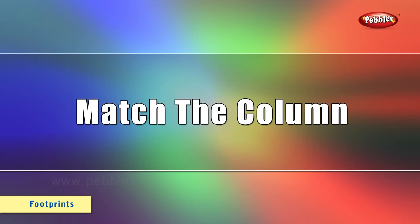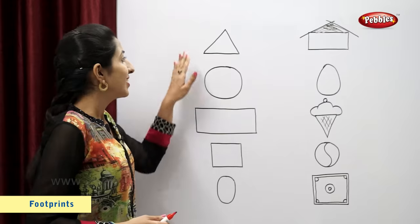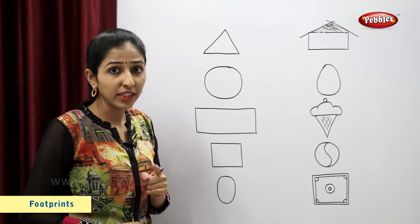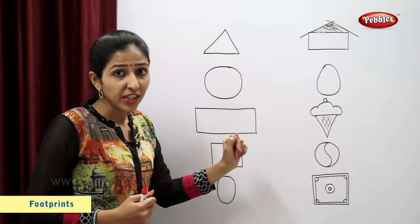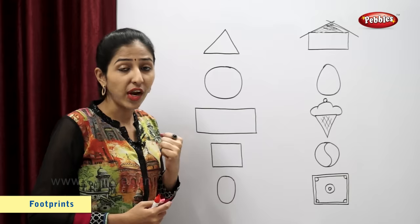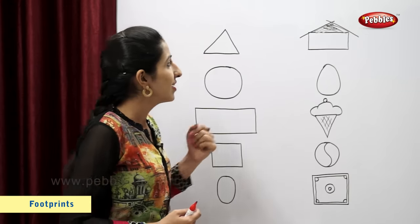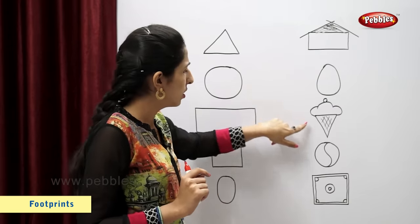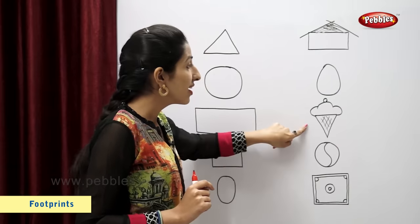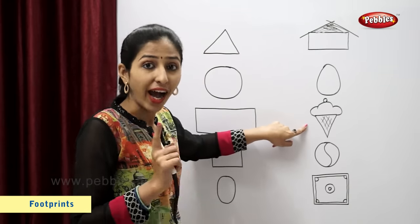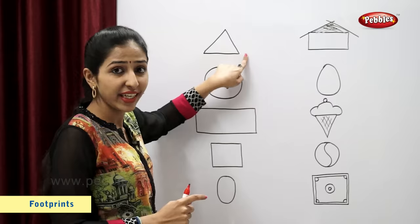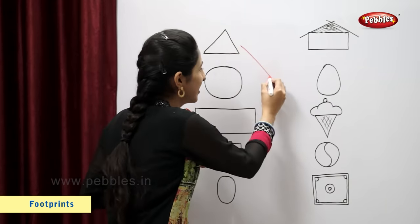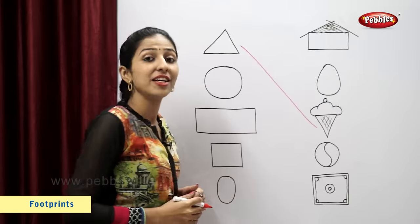Match the columns. This is a triangle. Now you tell me students, which is the figure similar to the triangle? Ice cream is similar to the triangle. Now let's match. Very good.